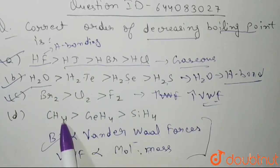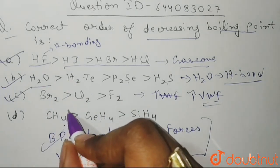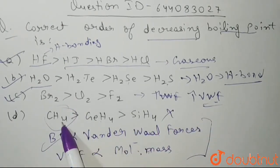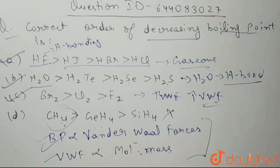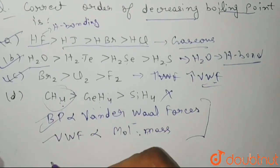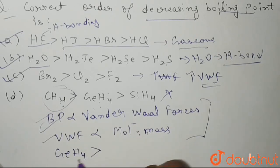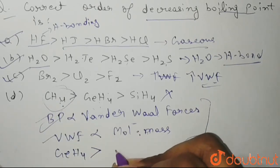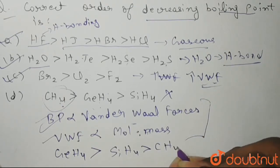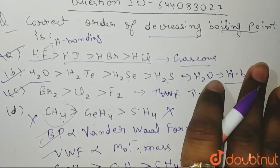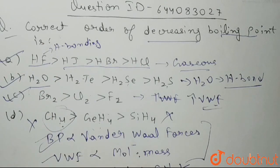But if you see CH₄, GeH₄, and SiH₄ — methane, that is CH₄, is not going to form any hydrogen bonding. So this order will be incorrect. What will follow here is: greater the molecular mass, greater will be the Van der Waal forces, greater will be the boiling point. So the correct order will be GeH₄ > SiH₄ > CH₄, meaning option D is incorrect. Therefore, ABC is the correct answer.